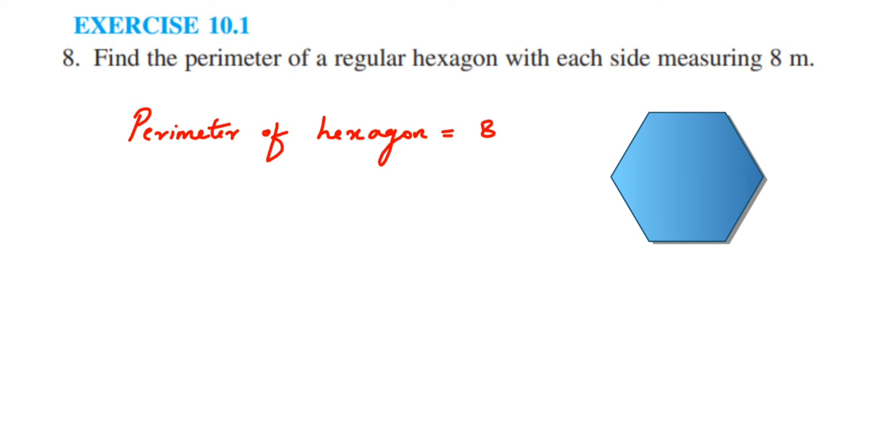So 8 is a side of the hexagon. Instead of adding 8 six times, we are going to multiply with 6. So 8 times 6 is 48, we will get 48 meter. So this is the perimeter of regular hexagon.